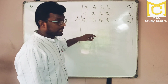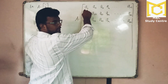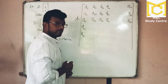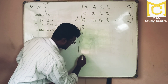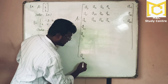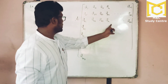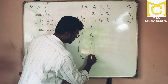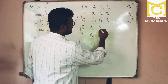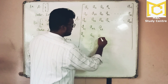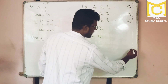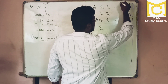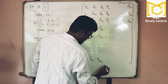Going on to the mth row and nth column: the element position is Aₘₙ. So any element in the matrix can be identified by its row number i and column number j, written as Aᵢⱼ. This is the general notation for a matrix element.